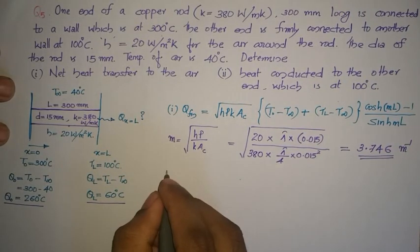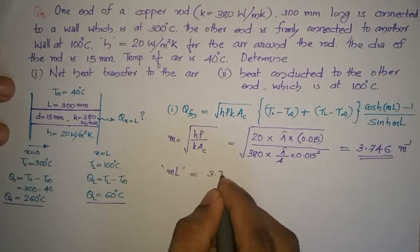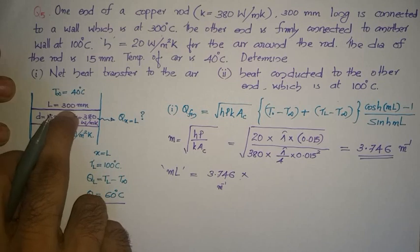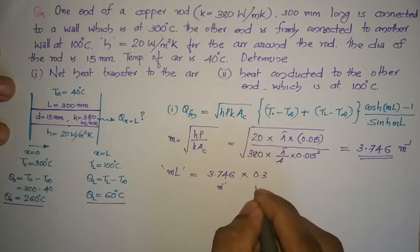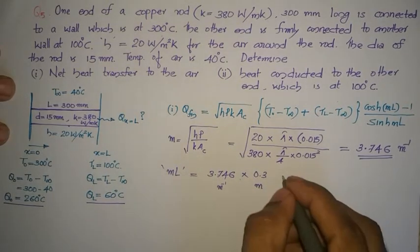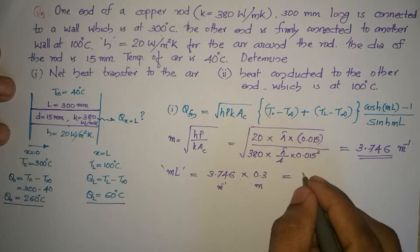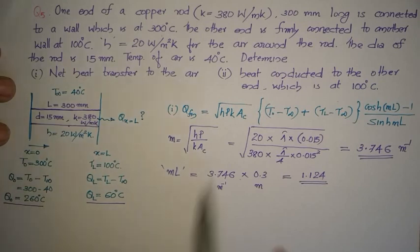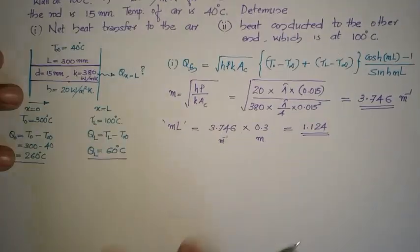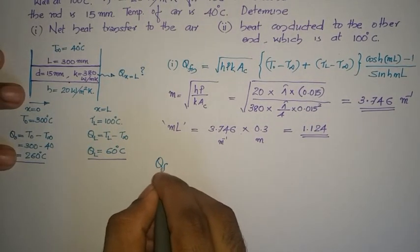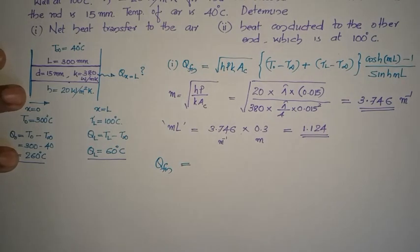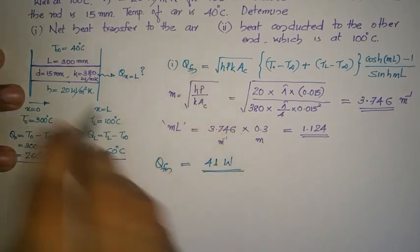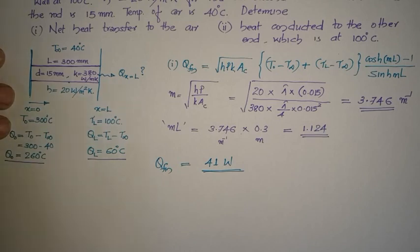For substitution it is better to find M × L first. M × L = 3.746 m⁻¹ × 0.3 m = 1.124. Now substituting all the values of H, P, K, and A_c into the Q_fin expression, Q_fin = 41 watts. This is the answer for the first part: the net heat transfer to the air, or the heat transferred by the fin.